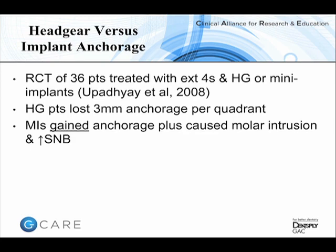The anchorage gain occurred because retraction of the anterior segment continued after the bicuspid space was closed, causing the molars to distalize slightly. We also got a flavor that anchorage affects three dimensions, because in this study the maxillary molars were intruded, causing a small auto-rotation of the mandible that made the Class 2 element less.